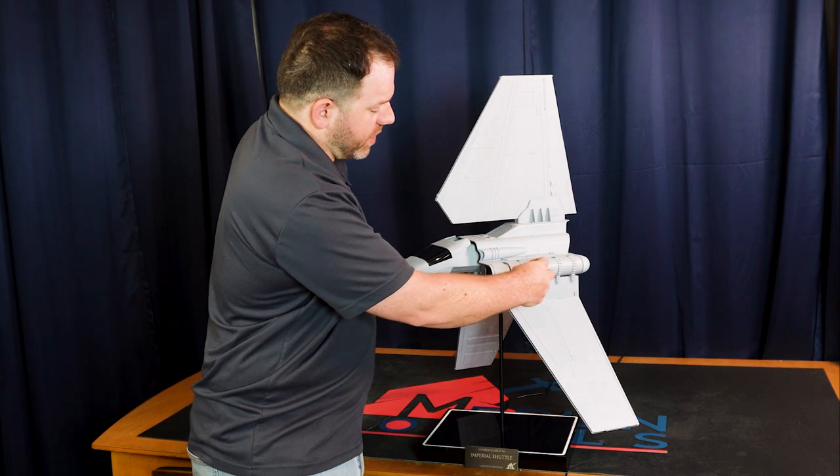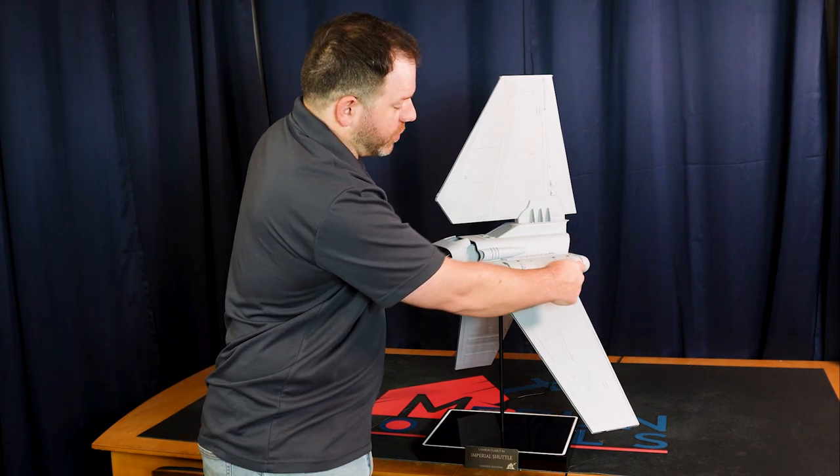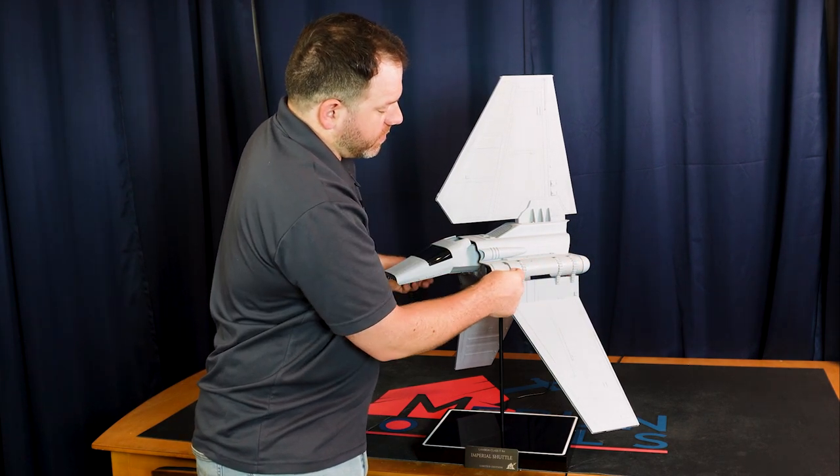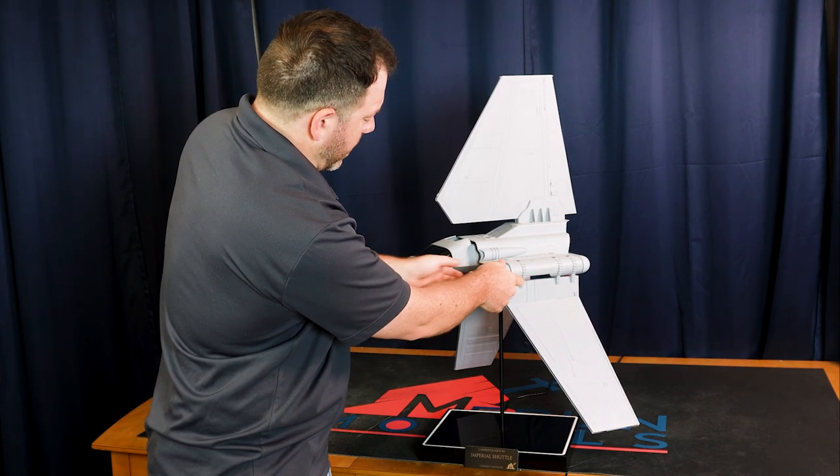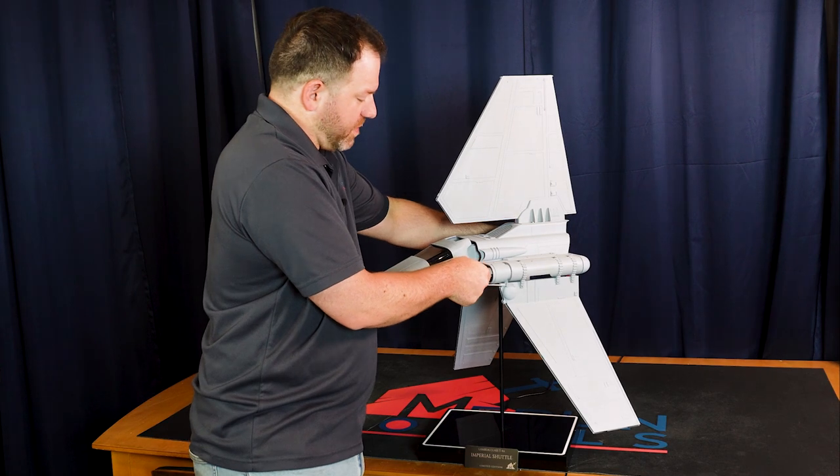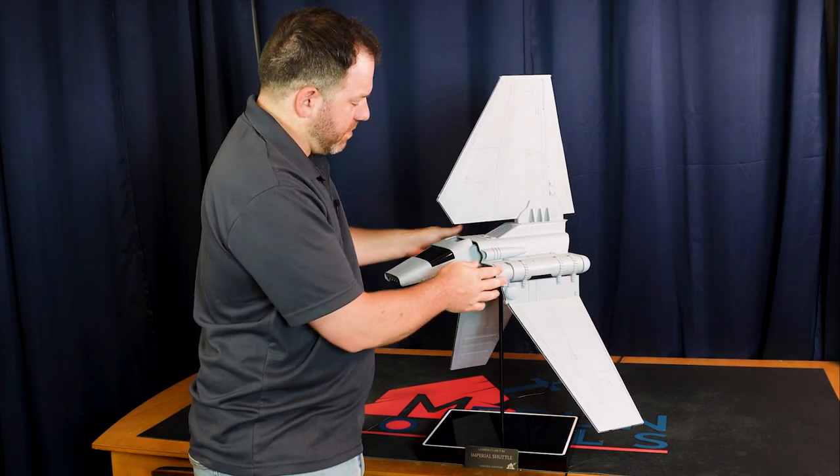So if you loosen up that nut, it's going to relieve tension. It's just a friction tension on all of these hinges, and then you can adjust your wings, and then just put them back in, and then this just pops back into place. Very easy, very simple.